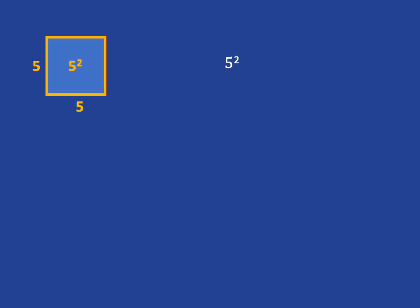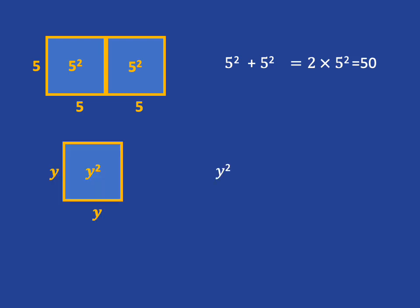It would be no problem if you had 5 squared, for example, plus 5 squared, then that total area there, you can see you've just got the 5 squared, which is 25, another 5 squared, 25. In total, you've got two lots of 25, which is 50, so two lots of 5 squared. So that's going to be the same story.